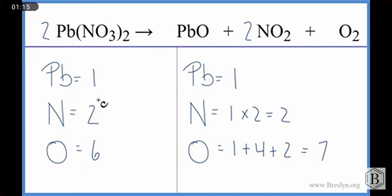So let's update these numbers here. I have one times two. Now I have two leads. And then for the nitrogen, I have two times the one times the two. So essentially two times two. I have four nitrogens. And then oxygens,